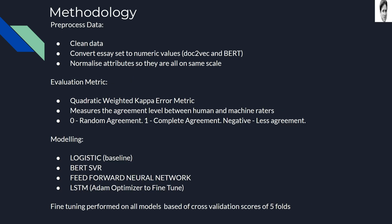The methodology follows a standard NLP process where we vectorize the essays. Two forms are Doc2Vec and BERT. We use an evaluation metric of a quadratic weighted kappa score, which is basically the agreement between the human and the machine. We fit several models, focusing on feedforward neural network and LSTM. Fine-tuning is performed after five cross-validations.